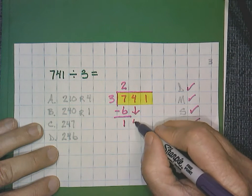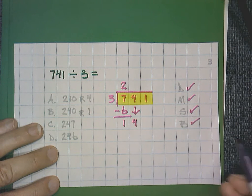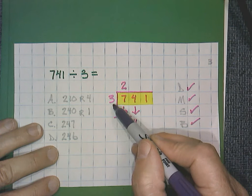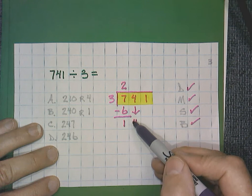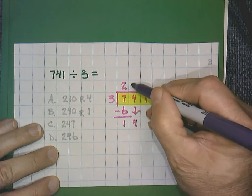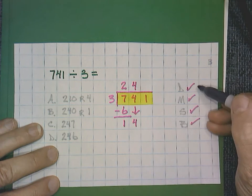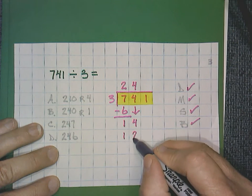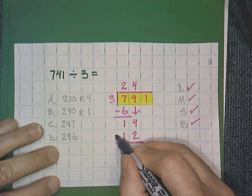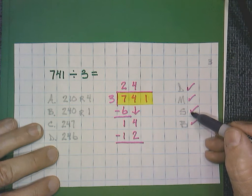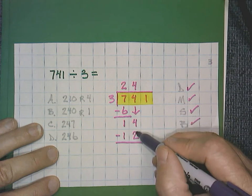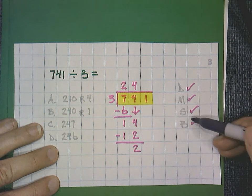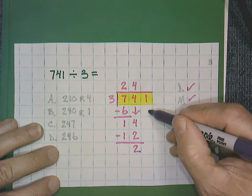I'm going to bring that 4 down. And then we start over with the divide. 14 divided by 3. Well, 3 will go into 14 a total of 4 times. That's our divide. Now we multiply. 4 times 3 is 12. And that brings us to the subtract step. 4 minus 2 is 2. Notice we still have this 1. So we will do the bring down step again.